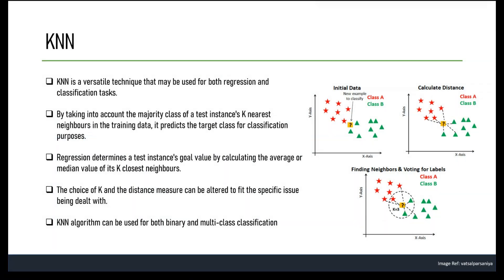In this video we will be learning about the K-Nearest Neighbor algorithm. KNN is a machine learning algorithm that can be used for both classification and regression. Unlike linear or logistic regression which can handle only a single type of problem, KNN is a versatile algorithm that can be applied to a wide range of problems.